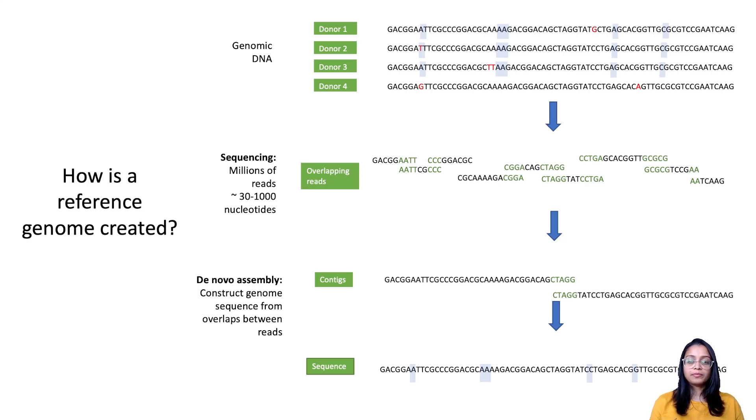The order of the reads can be computationally inferred by detecting overlapping regions between the reads. The more similarity between the end of one read and the beginning of another, the more likely that they are originating from overlapping sections of the genome. The computer program pieces shorter reads together into larger overlapping chunks and these are called contigs, which are short for contiguous sequence.